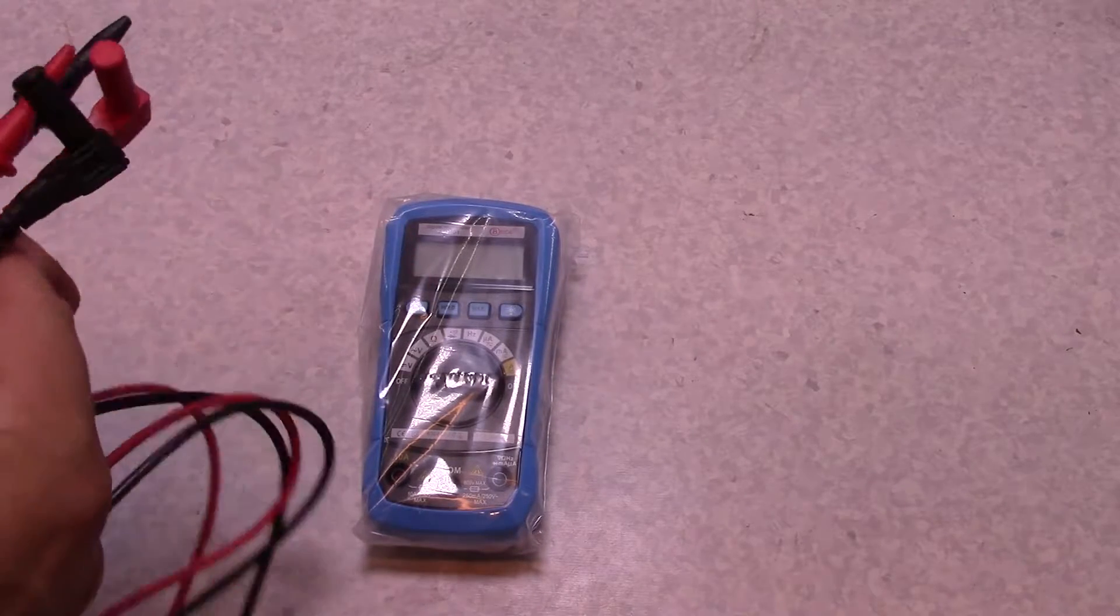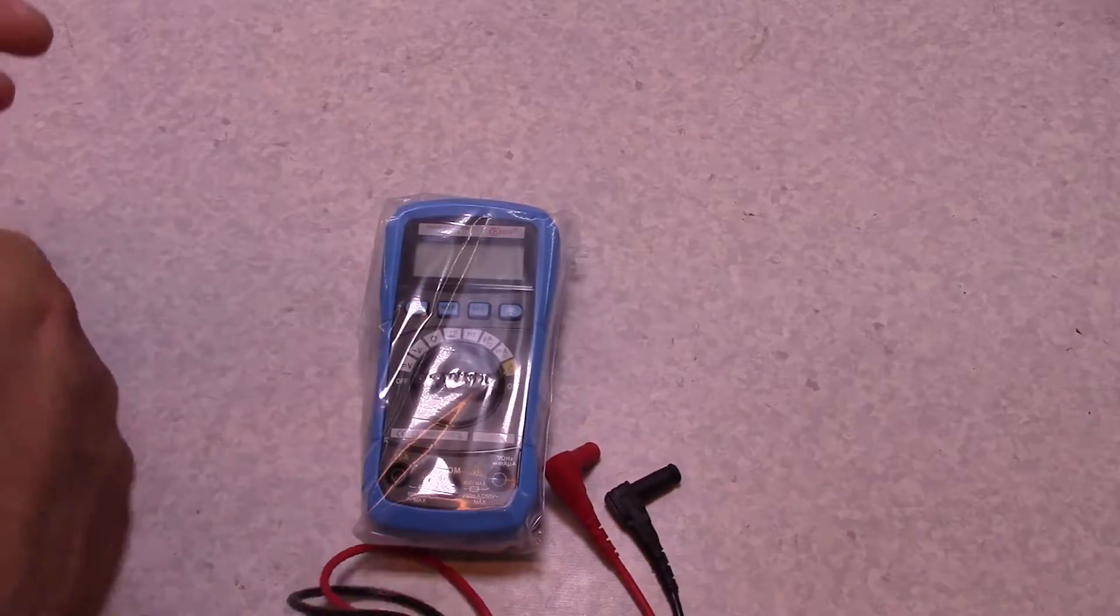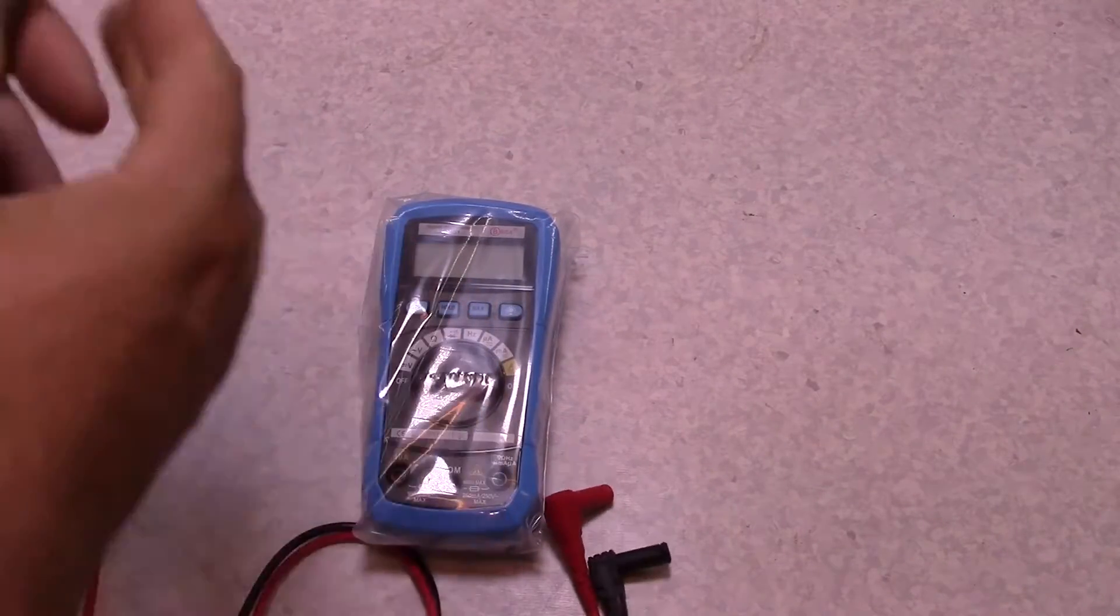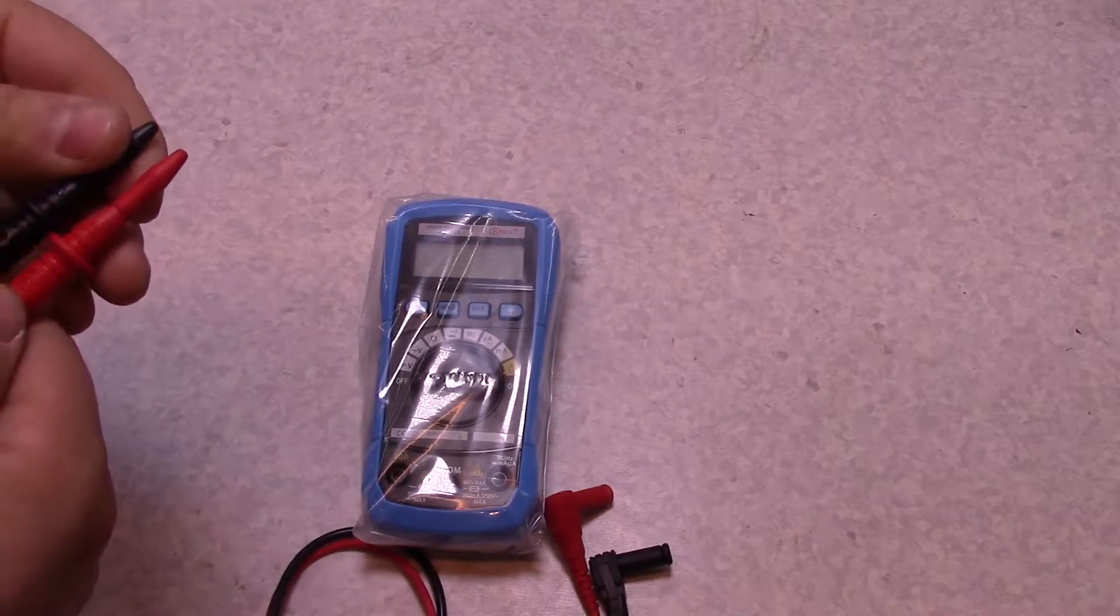So I'll pull these leads out and yeah, they're pretty stiff. It'll be PVC insulation there, most likely.